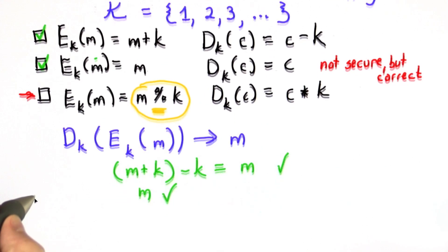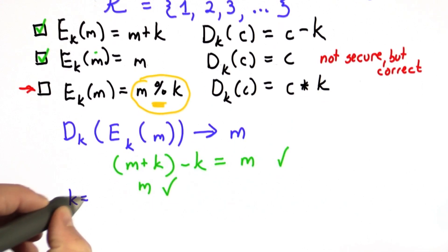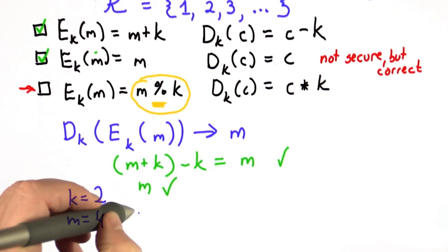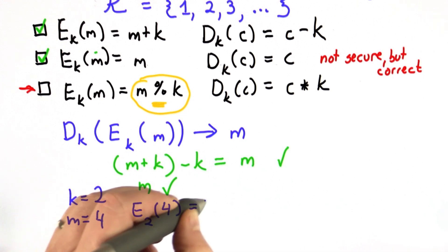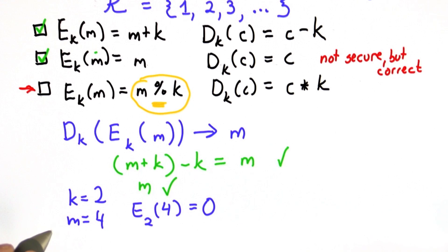An example of that would be if we choose k equals 2, if m equals 4, then the encryption of that message is equal to 0, because the remainder of dividing 4 by 2 is 0.